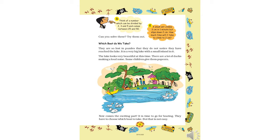The next puzzle: a small ant climbs 3 centimeters in one minute but slips down 2 centimeters. How much time will it take to climb 2 centimeters? The ant climbs 3 cm up but slips down 2 cm, so net gain is 3 minus 2 = 1 centimeter per minute. To cover 2 centimeters, it will take 1 plus 1 = 2 minutes.